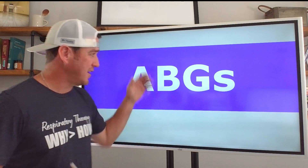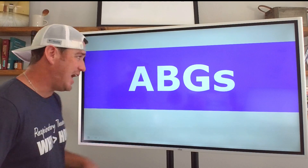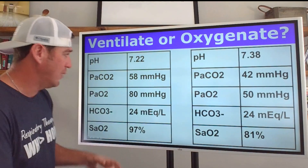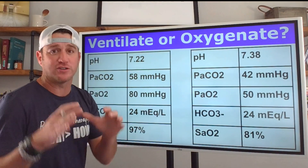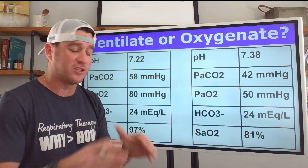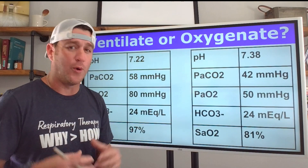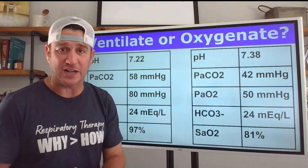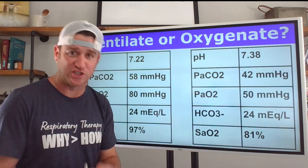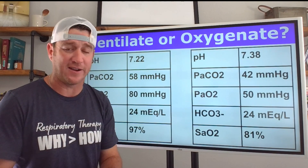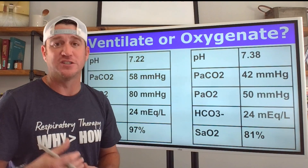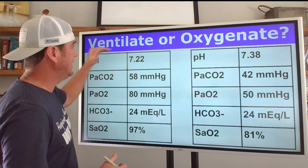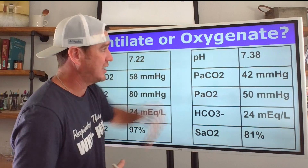We're talking all about ABGs — not interpreting them, but what are you going to do to fix them? Anytime you're given arterial blood gas values, you're going to have to ask yourself: is this a ventilation problem or is this an oxygenation problem? That's where you want to start, because if you start there, you're going to be better prepared to answer the question correctly. So we simply ask ourselves: do we need to ventilate or do we need to oxygenate?